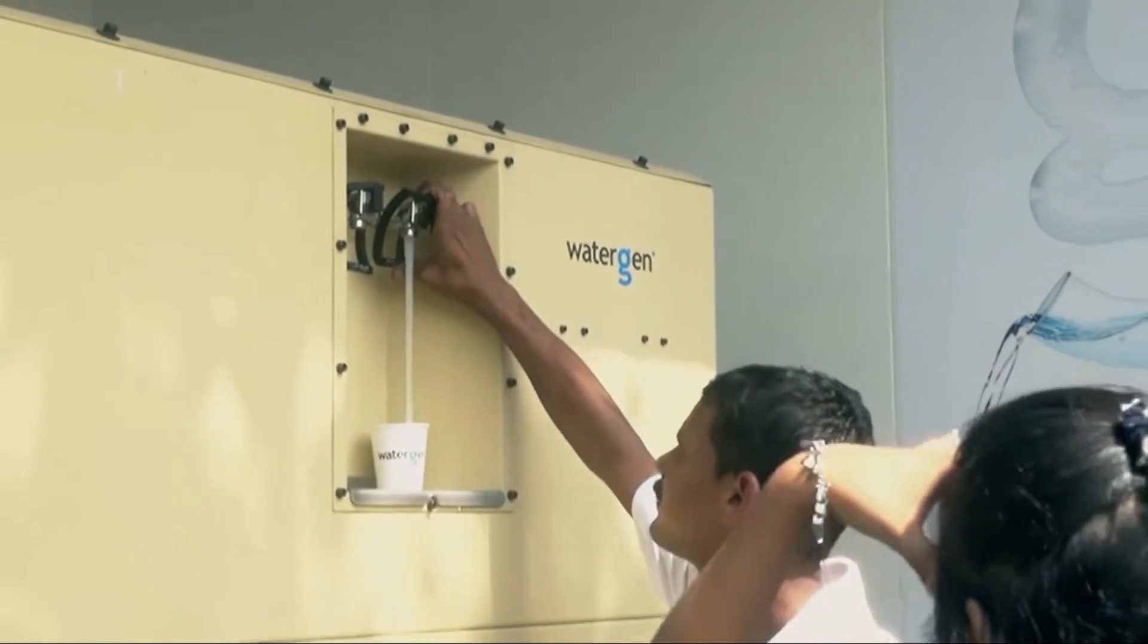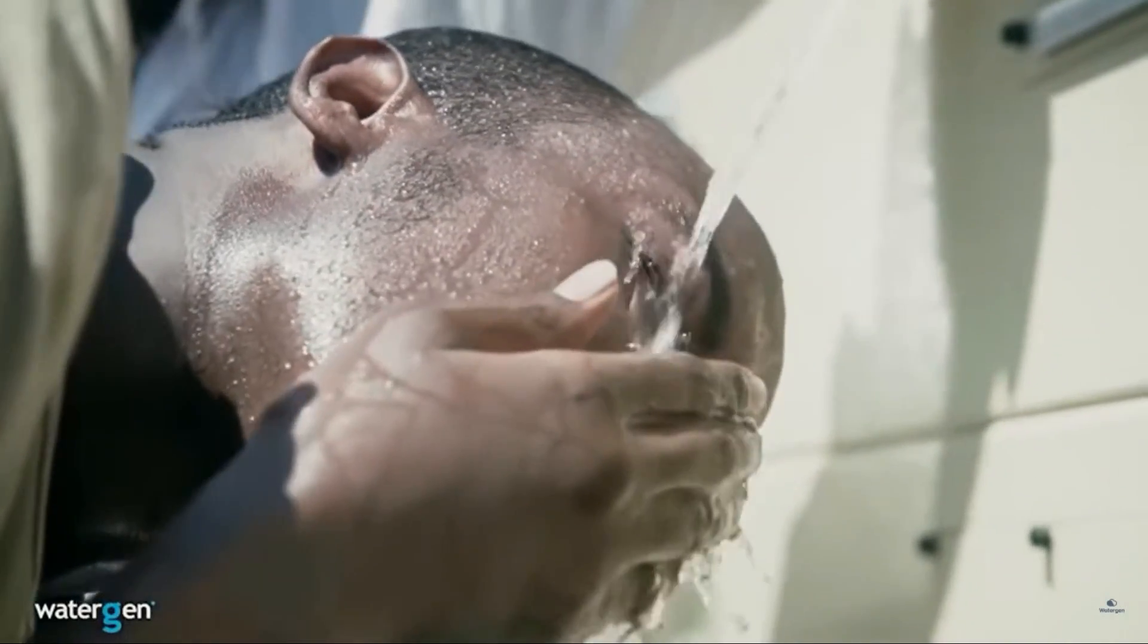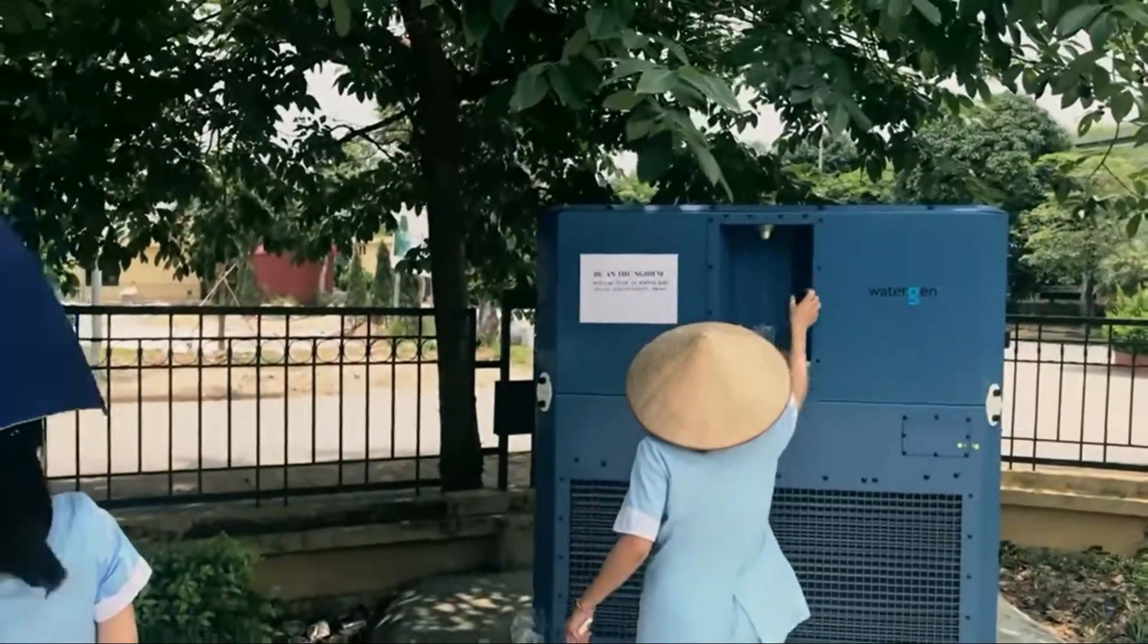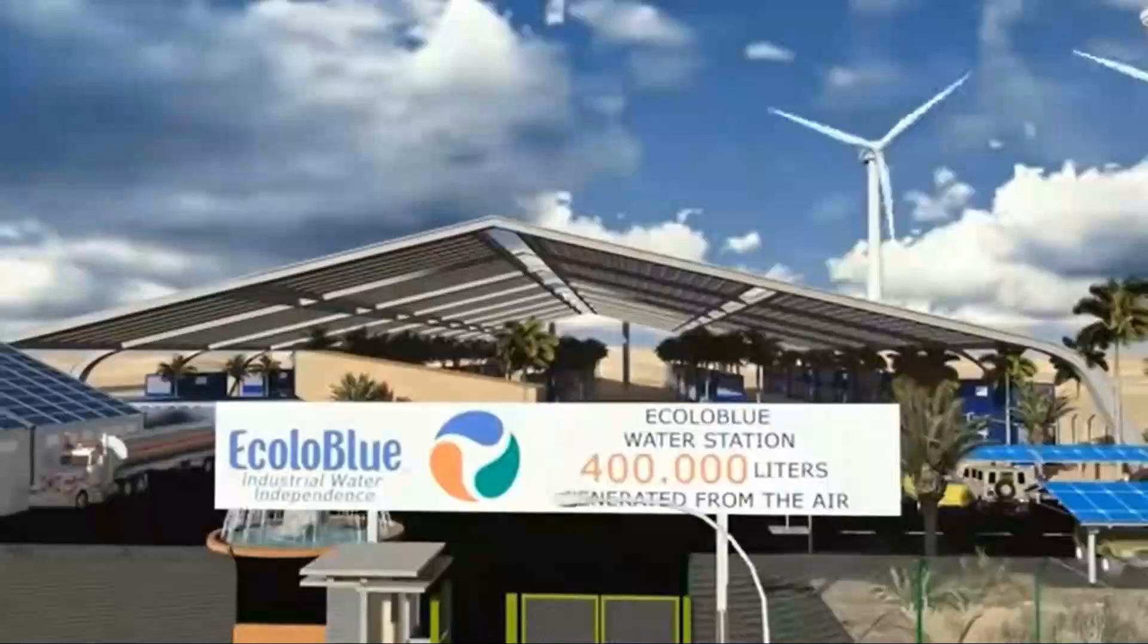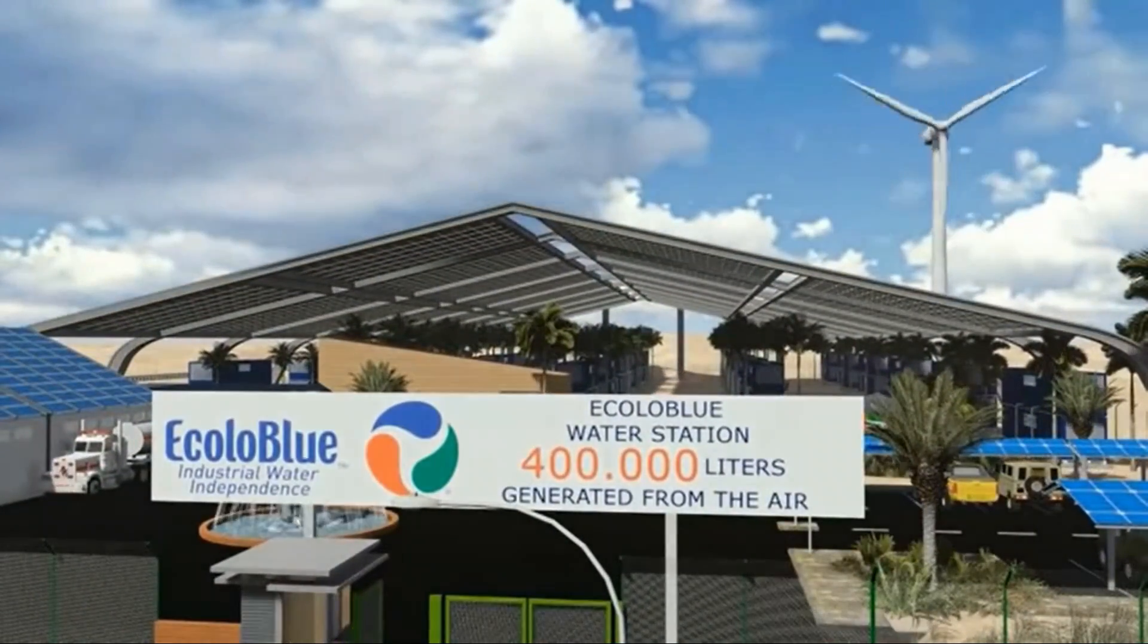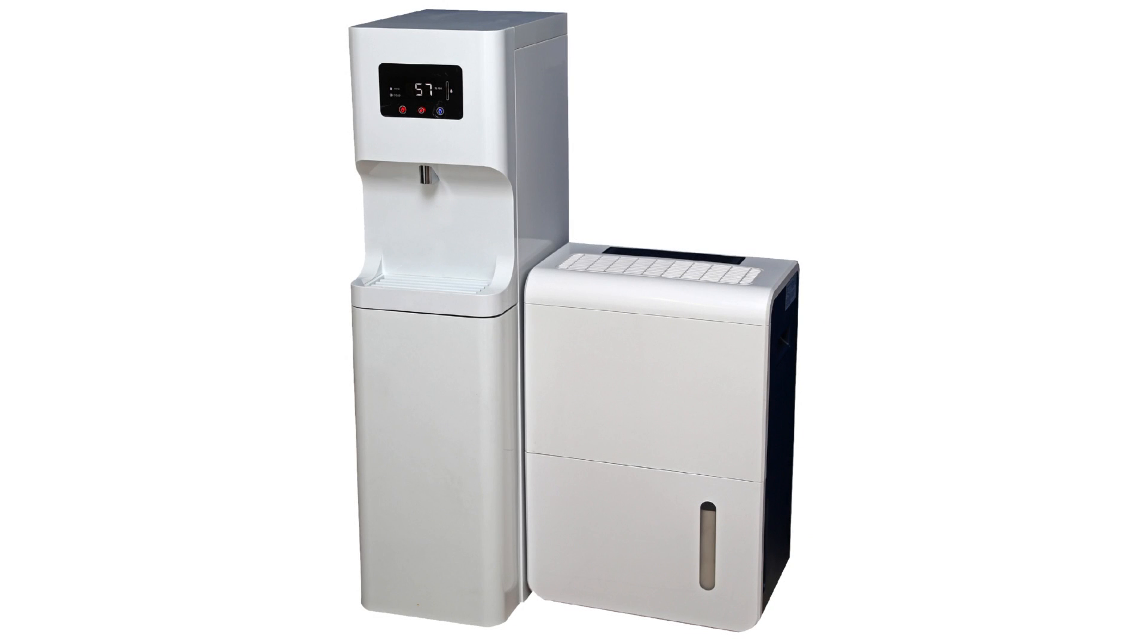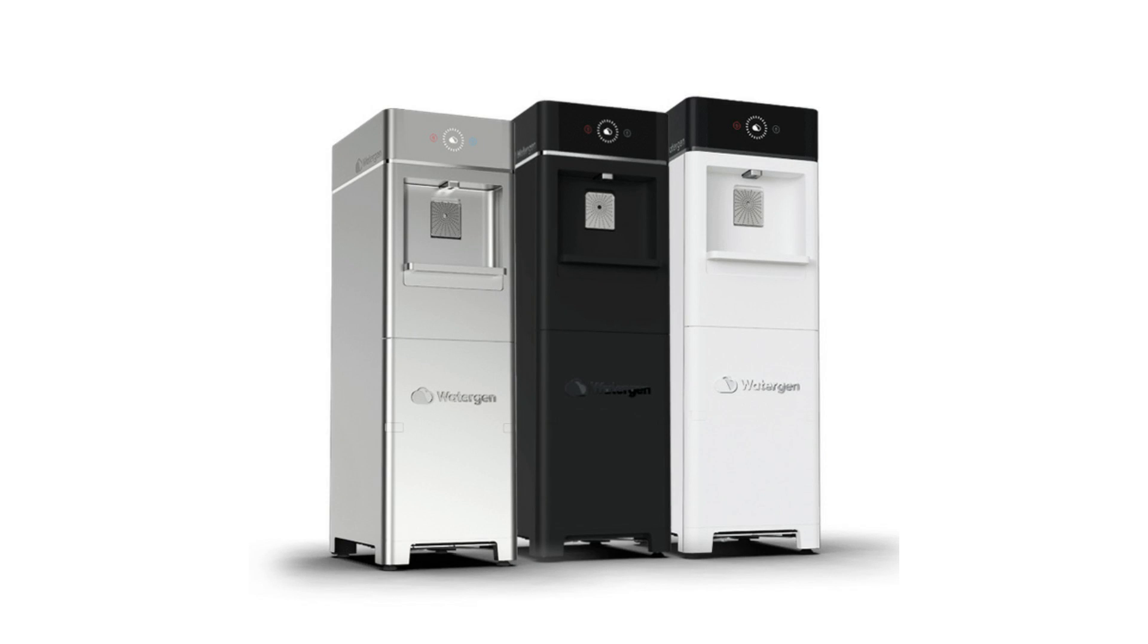Atmospheric water generation has carved its niche in water-stricken areas. Initially, these machines were used in very arid climates in remote, rural areas with little access to fresh water. As the technology has improved and the cost has dropped, it is now making its way into ordinary households where tap water may not be the best quality.